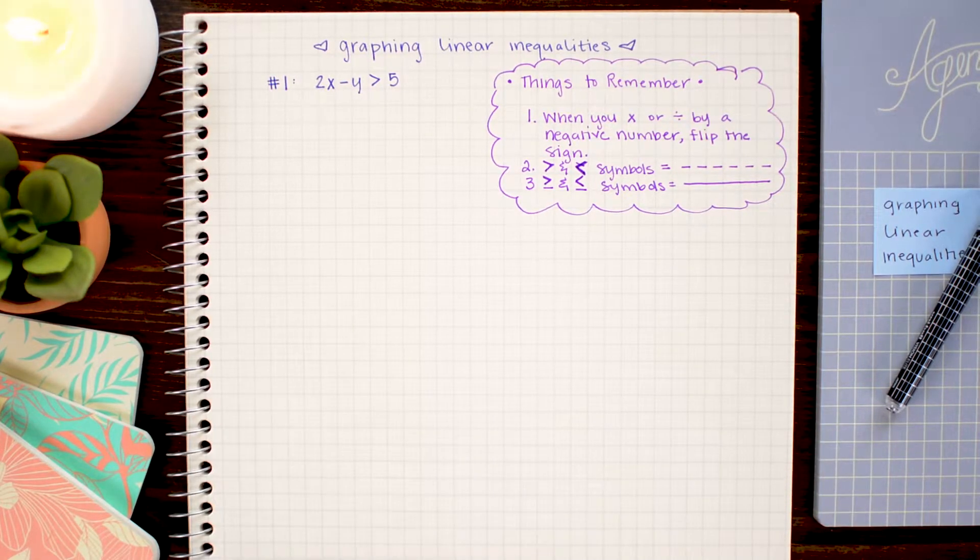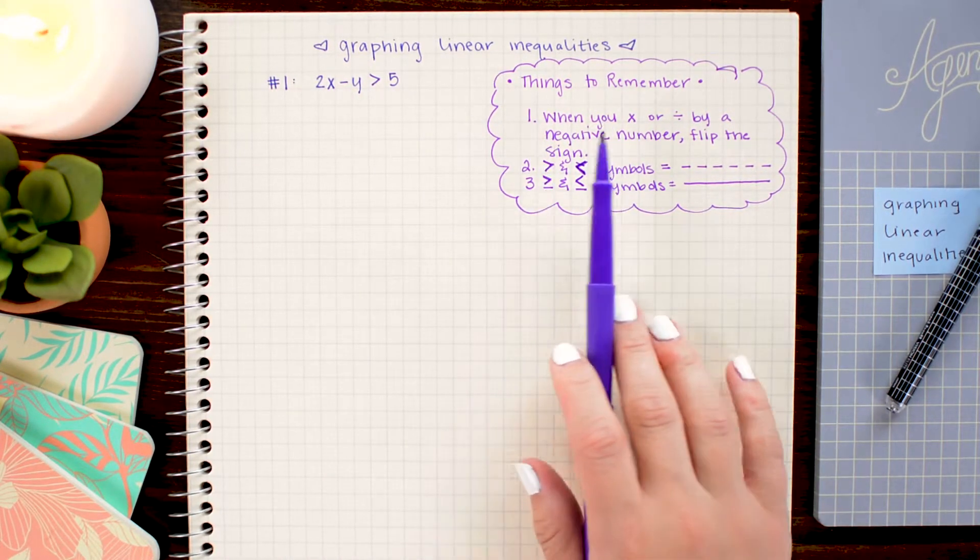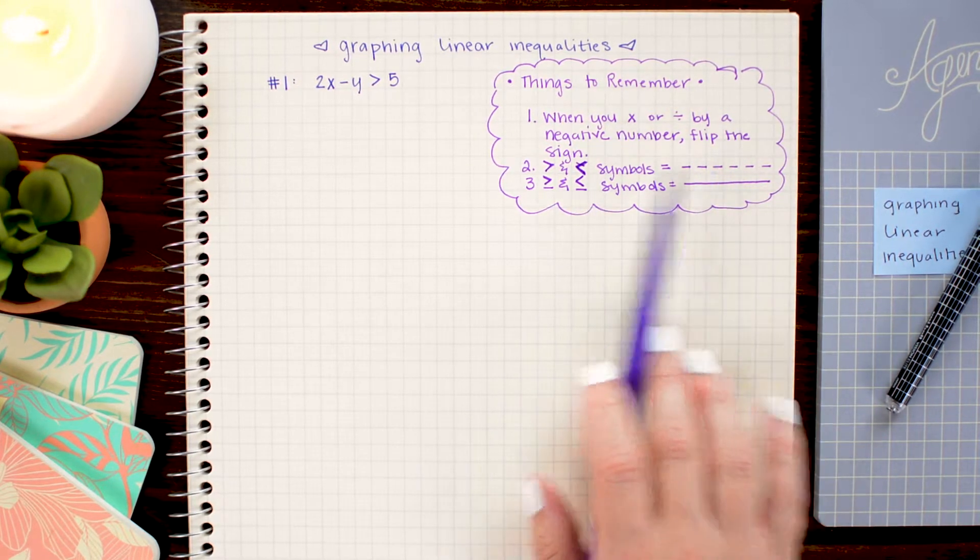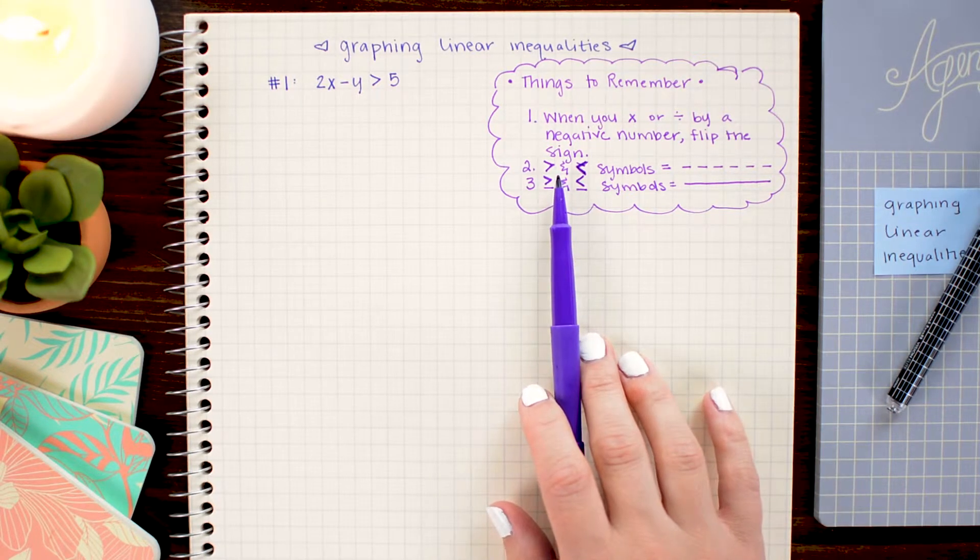Whenever you're working with linear inequalities, there are a few things you need to remember. First, when you multiply or divide by a negative number, you must flip the sign. And I will show you exactly what that looks like in our examples today.